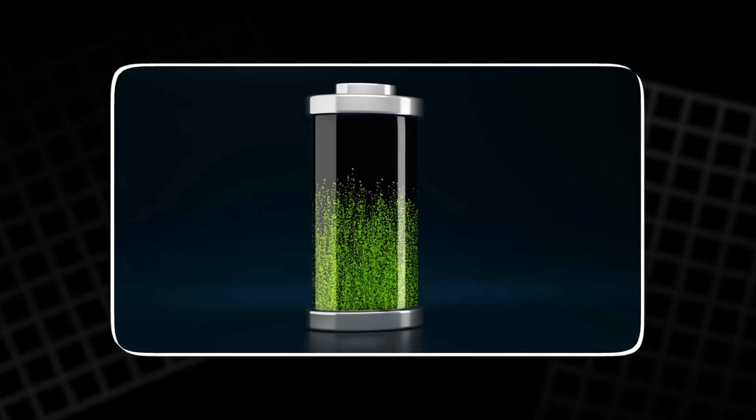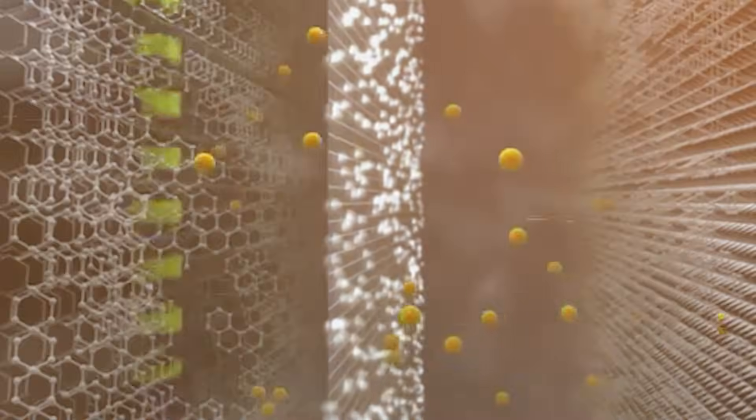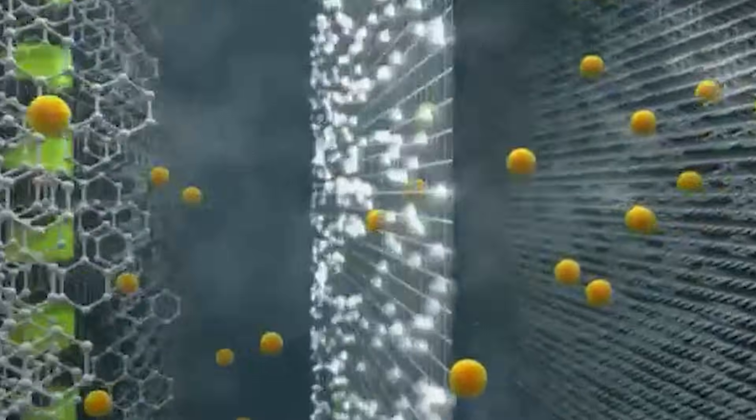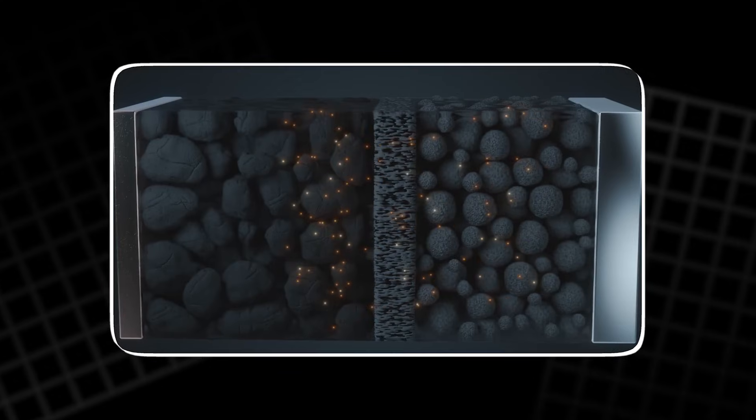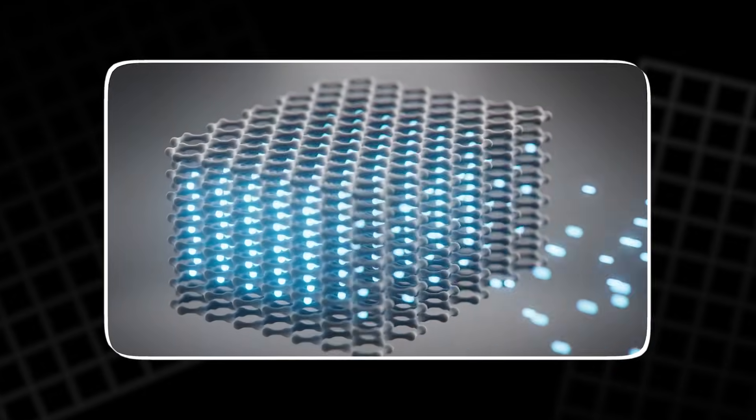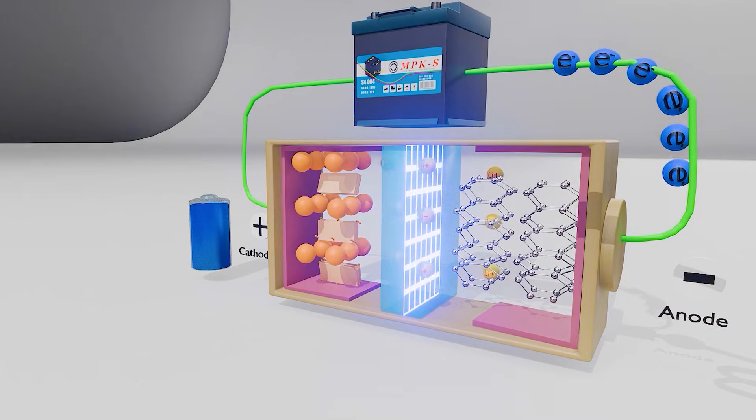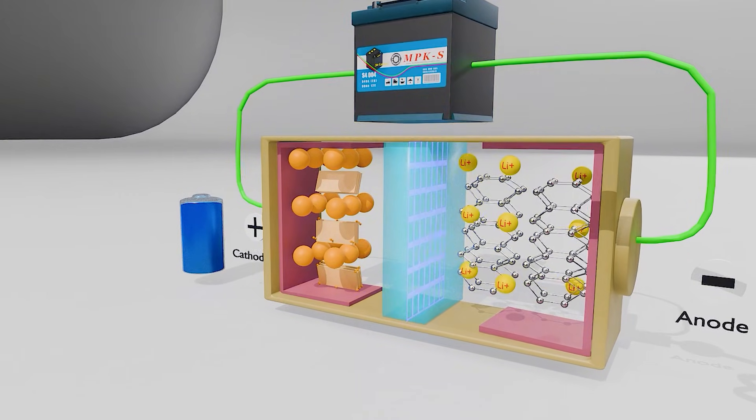Today, we will fly through a lithium-ion cell with a photoreal, mechanical view. We will pass hair-thin layers, dive into a cathode particle the size of a red blood cell, then zoom down to electrons and atoms. If you have ever asked why charging needs a rising voltage, or why ions move slowly while current feels instant, this story will make it click.